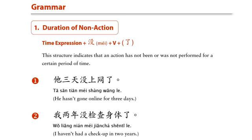Turn to pages 231 to 233 in your textbook and have a pen or pencil ready to take notes. Here we are on page 231 in the grammar section. This element is called Duration of Non-Action — how long something has not been happening, like I haven't eaten for three days, or I haven't played tennis in two years.